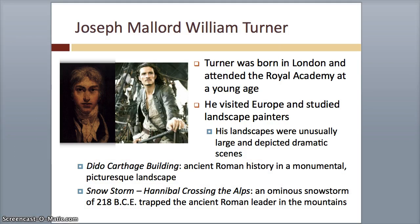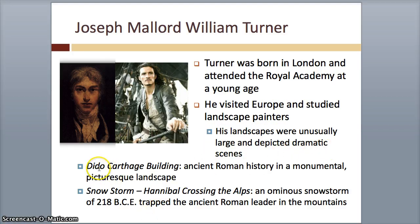Joseph Mallard William Turner — or just Turner — was born in London and attended the Royal Academy. He visited Europe and studied landscape painters. His landscapes were unusually large and depicted really dramatic scenes. The Dido Building Carthage depicted ancient Roman history in a monumental, picturesque landscape. He also had one called Snowstorm, which had an ominous snowstorm trapping the ancient Roman leader in the mountains.